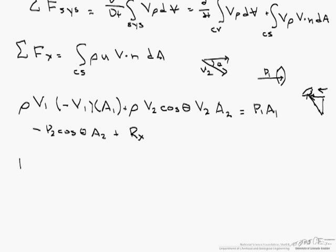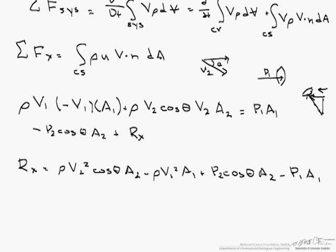If we write it in terms of R sub x, this is rho v2 squared cosine of theta times a2 minus rho v1 squared a1 plus p2 cosine of theta a2 minus p1 a1.